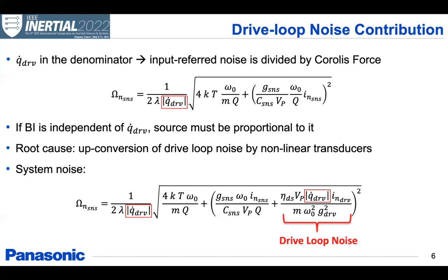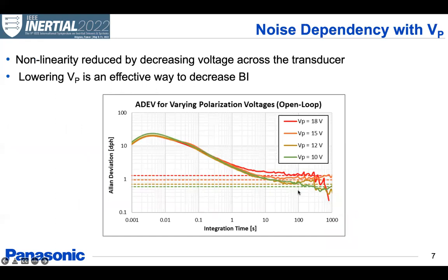Now, the question is, what can we do to reduce this flicker noise contribution and further reduce our bias instability? Well, an obvious answer is reduce the noise of the drive electronics. But we can also see that this expression depends on the polarization voltage of the device. So by reducing the voltage across these nonlinear transducers, we can decrease the nonlinearity and therefore the upconversion of noise and that lowers the bias instability. So in this Allan deviation plot here, we can see that we can reduce, in this particular example, the bias instability from around 1.5 dph to 0.5 dph, which is almost a linear relationship with how VP has been reduced. So this is a good method to further reduce the overall noise in the system.